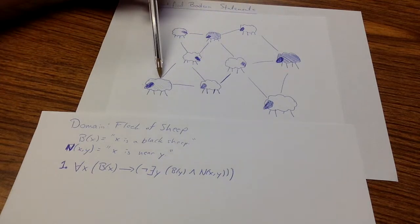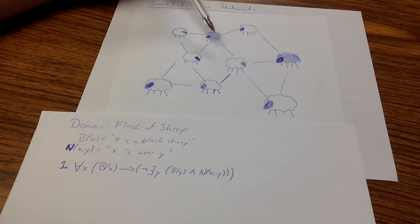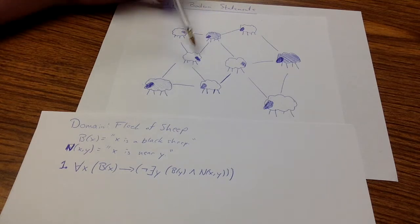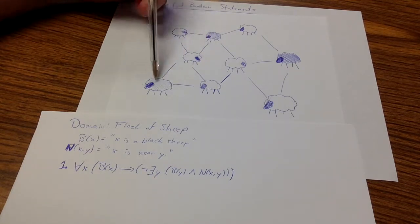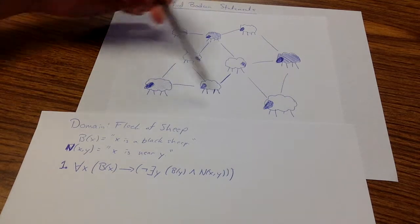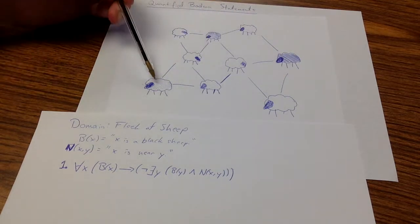So if I look at any black sheep x and any other sheep y, either y fails to be black but is nearby, or y is black but is not nearby. So this way, all the black sheep are spread out and they're not near each other.